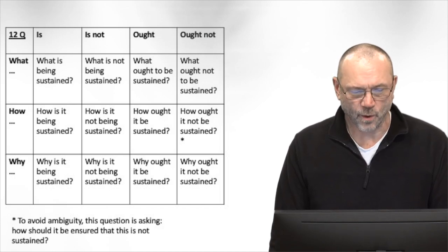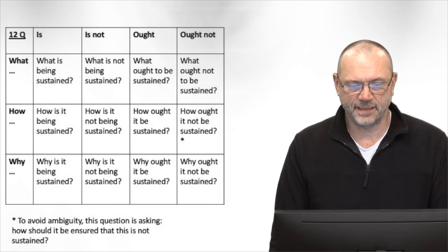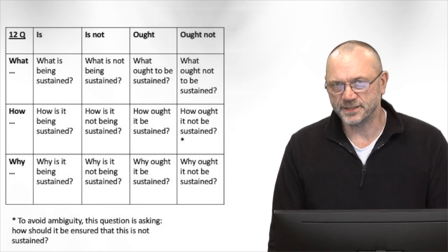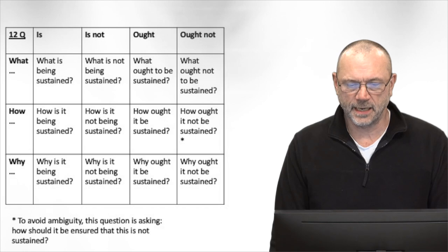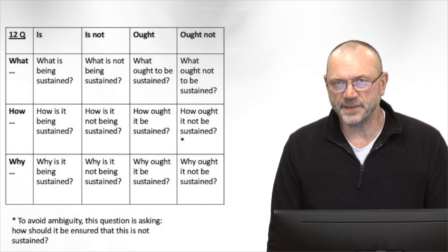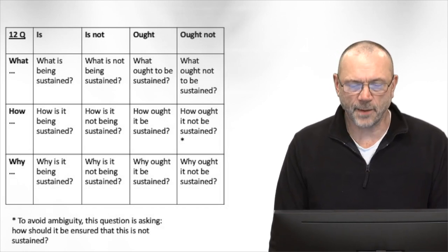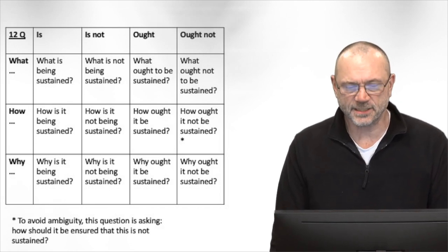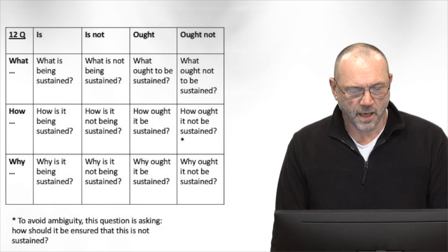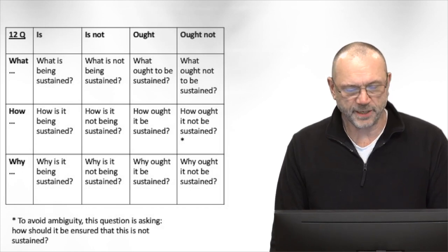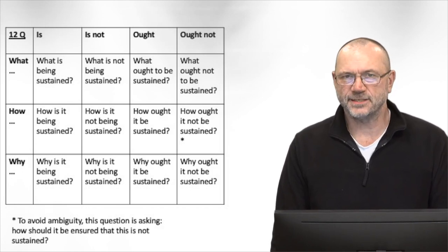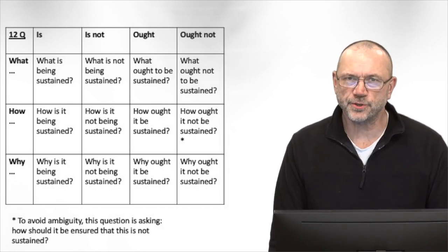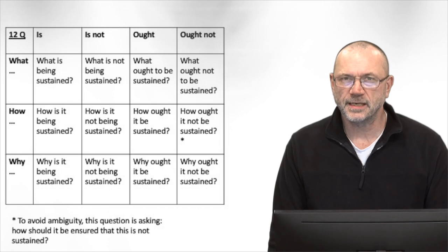Now we can move on to the 'how' questions. How is it being sustained? How is it not being sustained? How ought it be sustained? And how ought it not be sustained? There is some ambiguity in that last question — we can understand it as: how should it be ensured that this is not sustained?